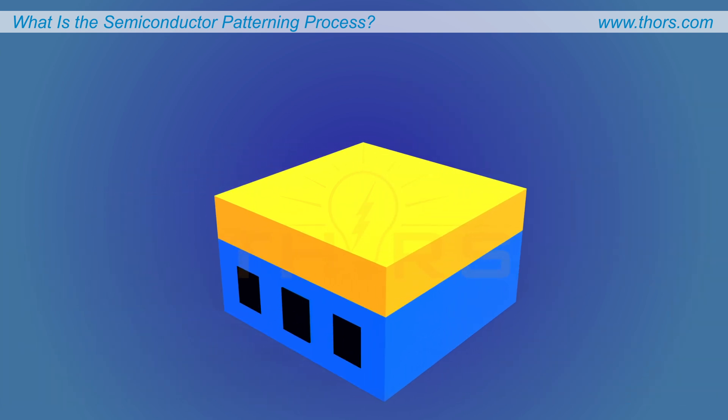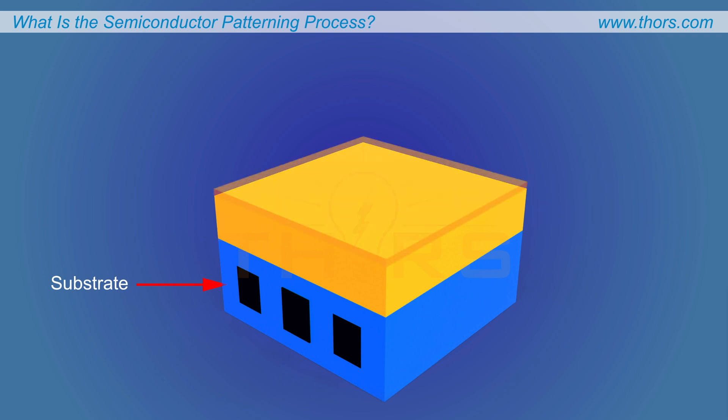The substrate is typically a wafer coated with various layers of materials. First, a photoresist is applied on the substrate.